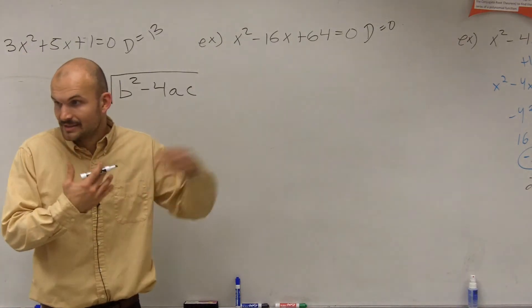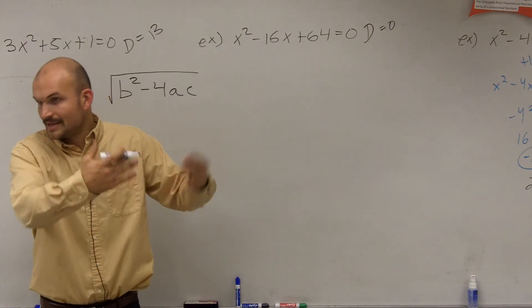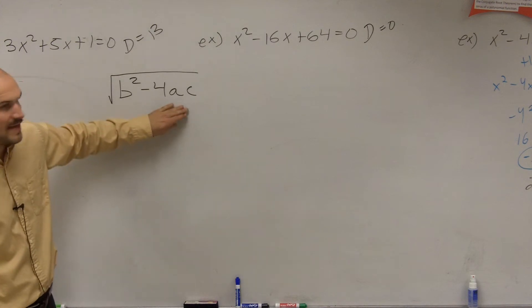By making i equal to the square root of negative 1, right? Square root of negative 1, make it i. So that's where this comes from.